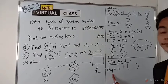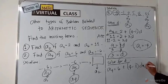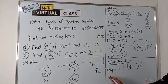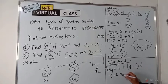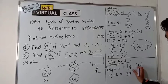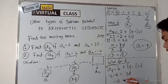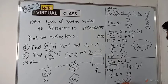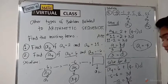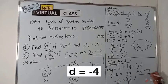To solve for the common difference: a sub four equals a sub one — which is six — plus n minus one, where n is four, minus one times d. By substitution, a sub four equals negative six. Transposing: negative six minus six equals 3d. Negative six minus six — adding like signs — gives negative twelve equals 3d. Dividing both sides by three: d equals negative twelve divided by three equals negative four. Your common difference is negative four.